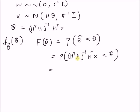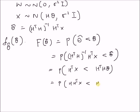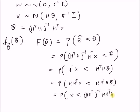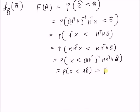By transferring the inverse matrix onto the right side, we have H transpose x is less than H transpose H times theta hat. By multiplying with matrix H on both sides, we have H H transpose x is less than H H transpose H times theta hat. This is equivalent to the probability of x less than H times H transpose H inverse H transpose H times theta hat, which simplifies to the probability of x less than H times theta hat. Therefore, this equals the CDF of the random vector x evaluated at x equal to H times theta hat.